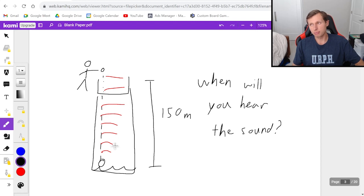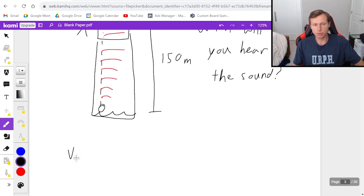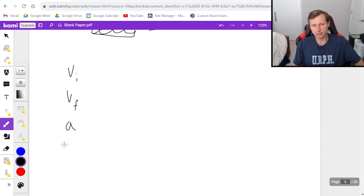So in order to find the first part with kinematics, what I like to do is I like to write out my five variables, v initial, v final, acceleration, time, and displacement, delta y.